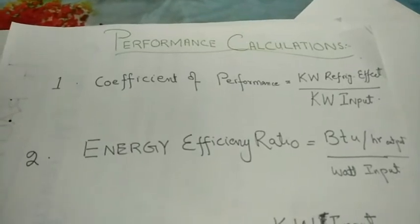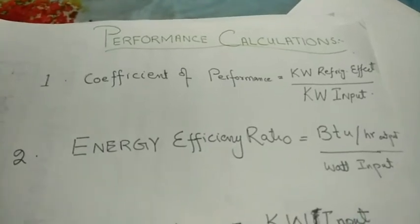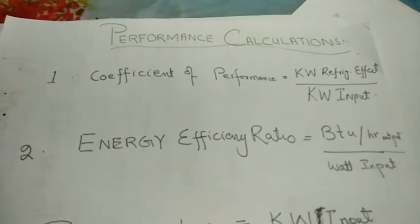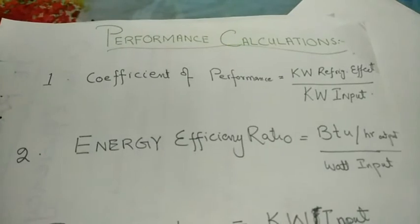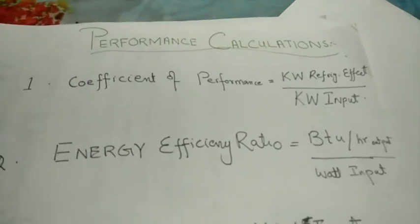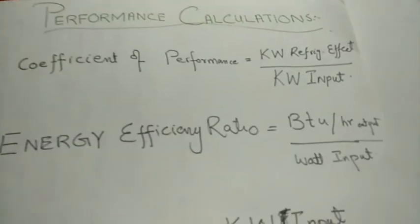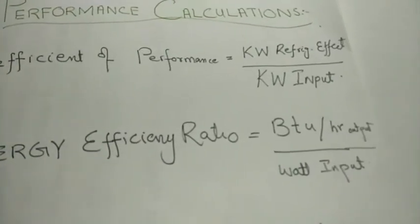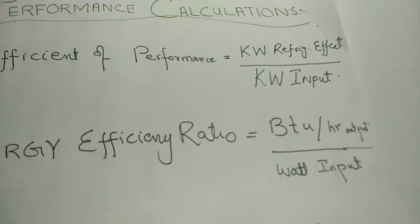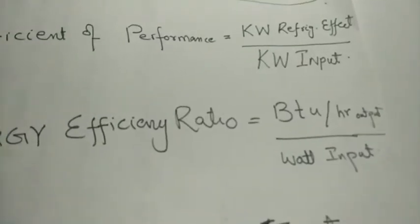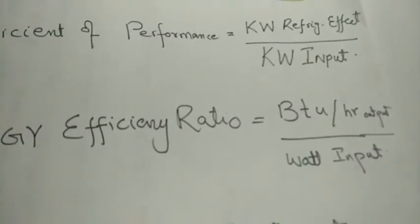The second performance-measuring formula for chiller or HVAC equipment is the Energy Efficiency Ratio (EER). EER is normally used for small equipment and is equal to the output in BTU per hour divided by the input in watts.